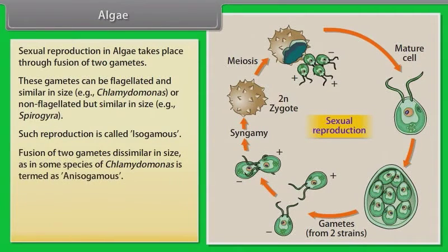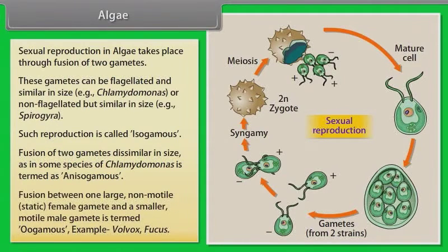Fusion of two gametes dissimilar in size, as in some species of Chlamydomonas, is termed as anisogamous. Fusion between one large, non-motile, static female gamete and a smaller, motile male gamete is termed oogamous. Example: Volvox, Fucus.